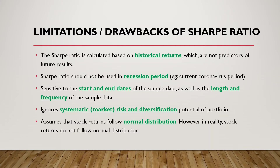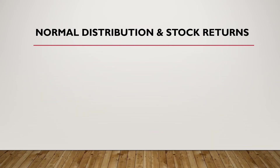The last limitation is that the Sharpe ratio assumes stock returns follow a normal distribution. Don't be too worried about the statistics — I will explain it simply. In reality, stock returns do not truly follow a normal distribution because they have a high peak and a fat tail.